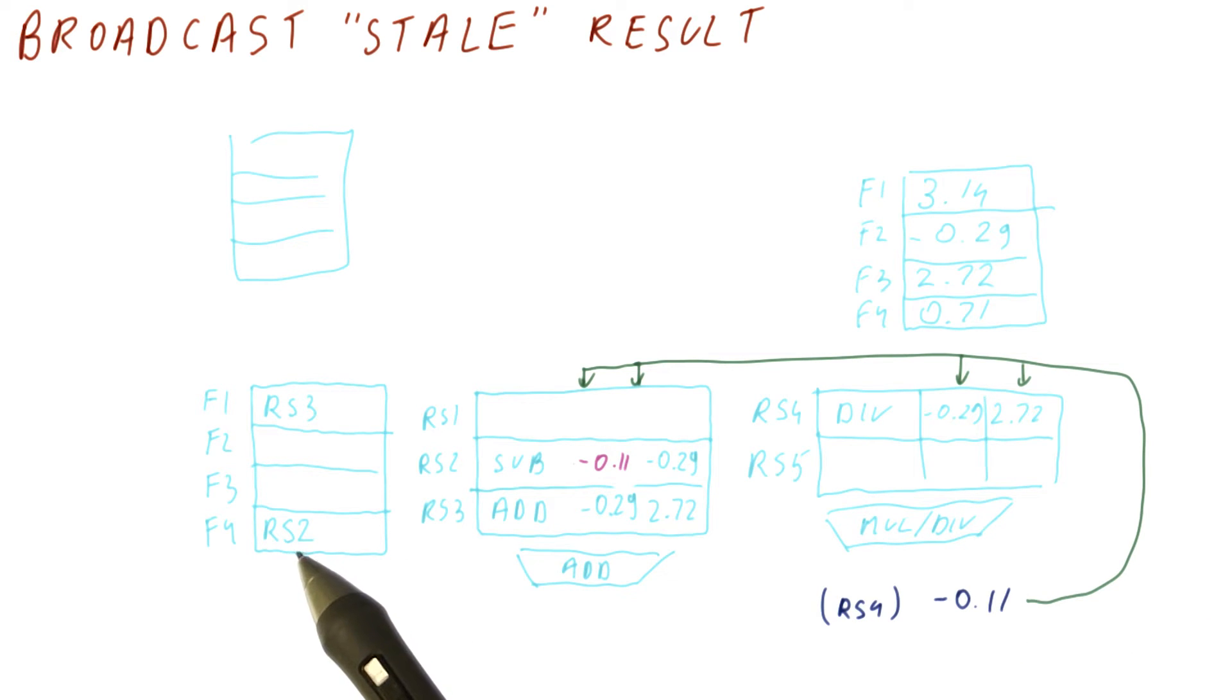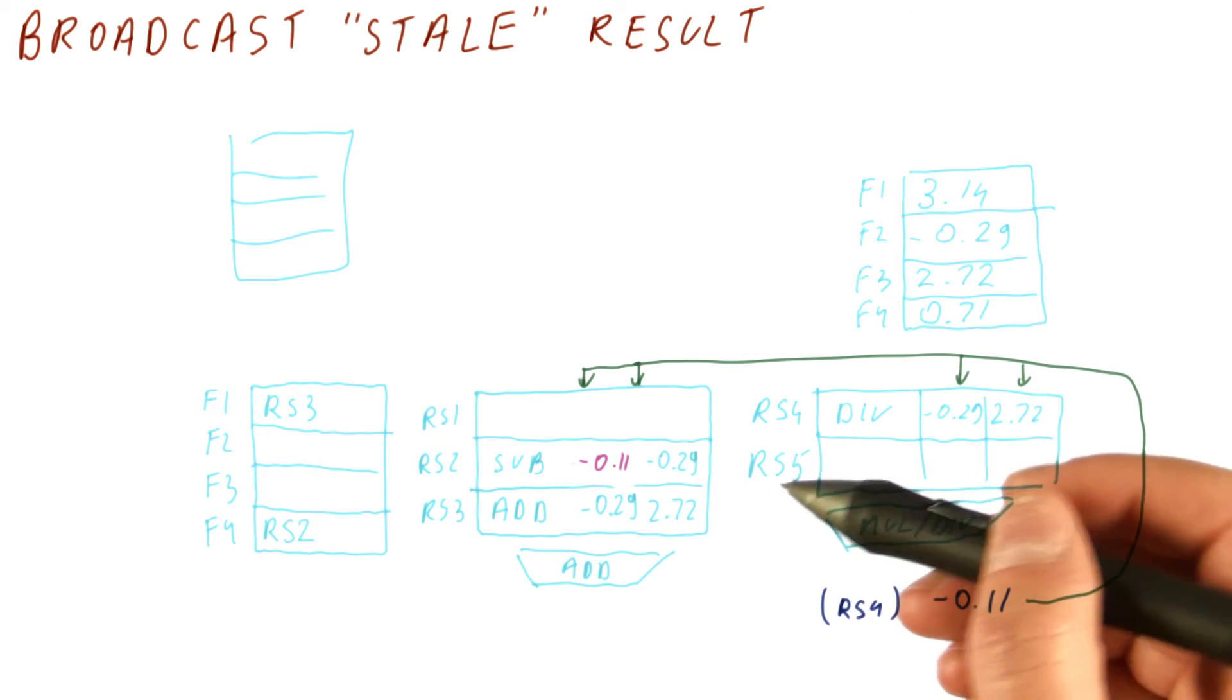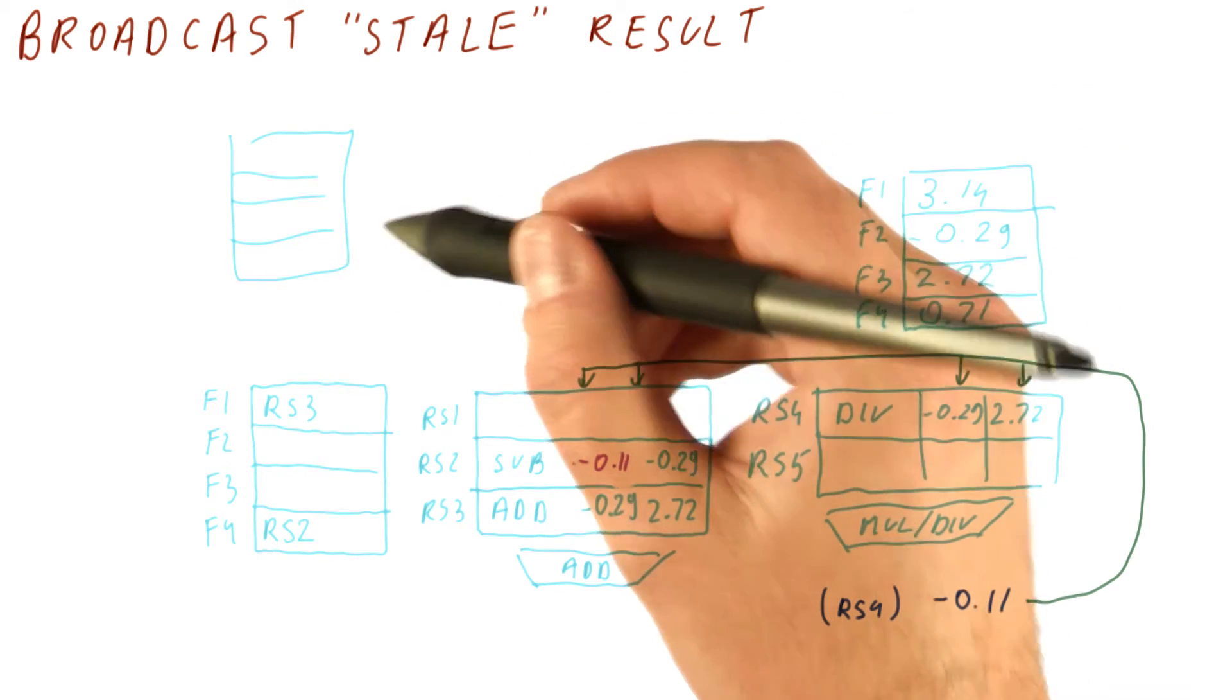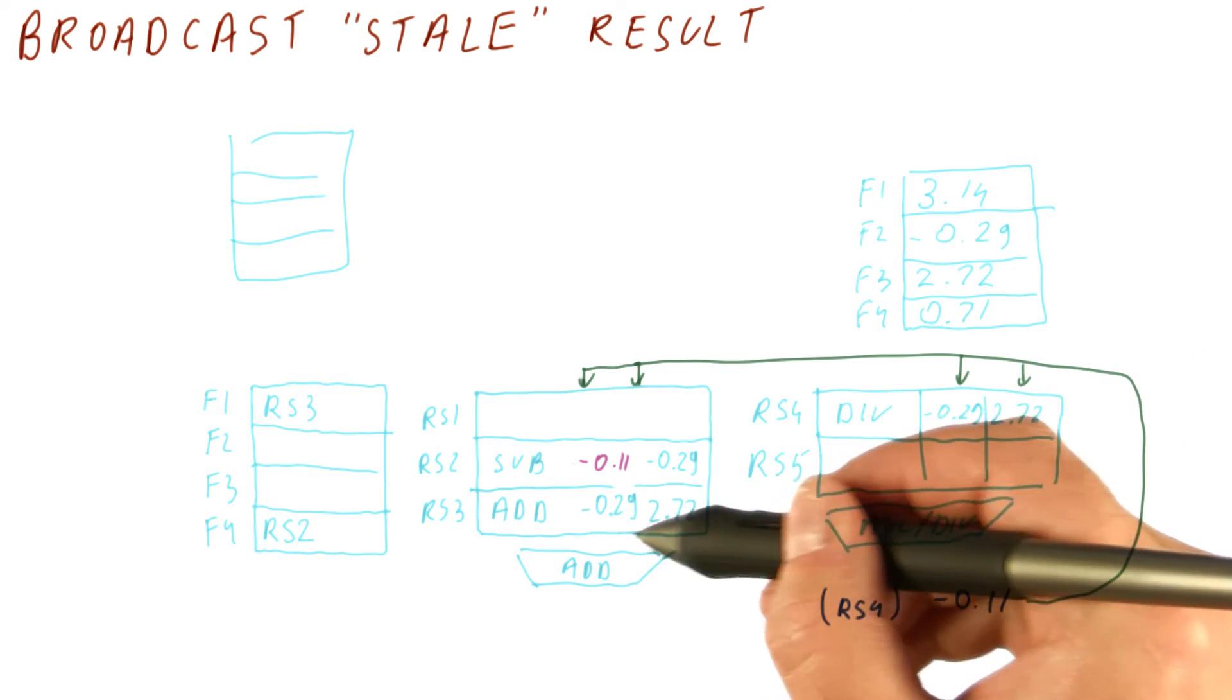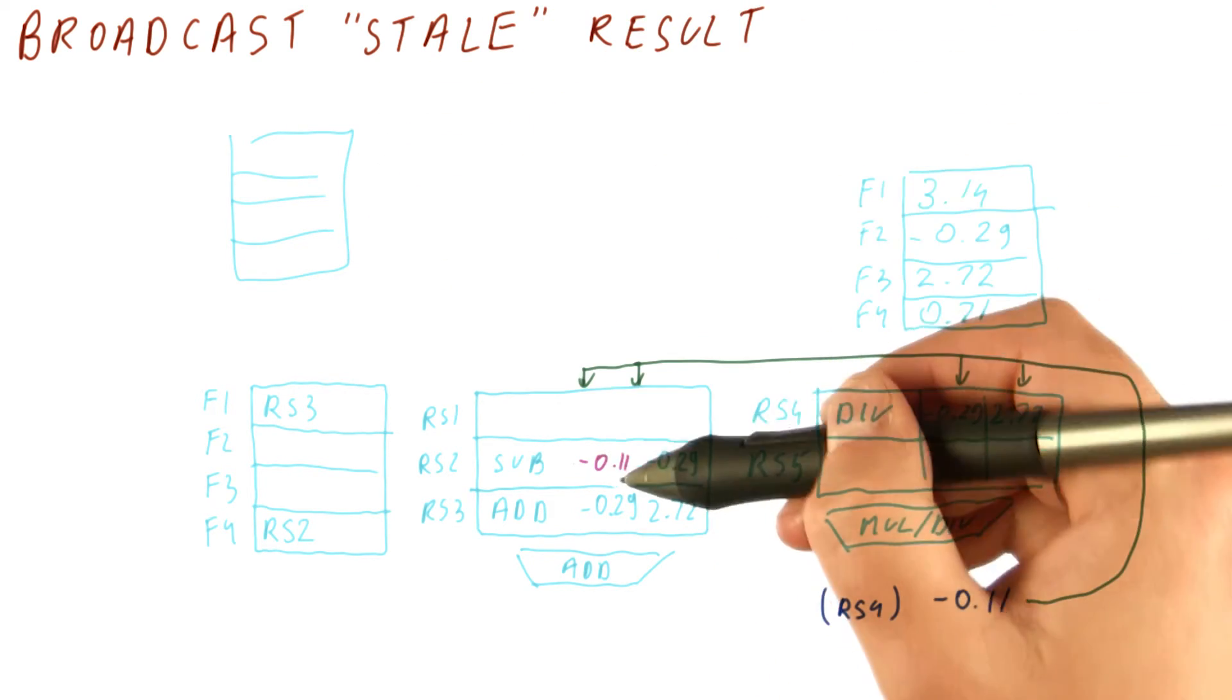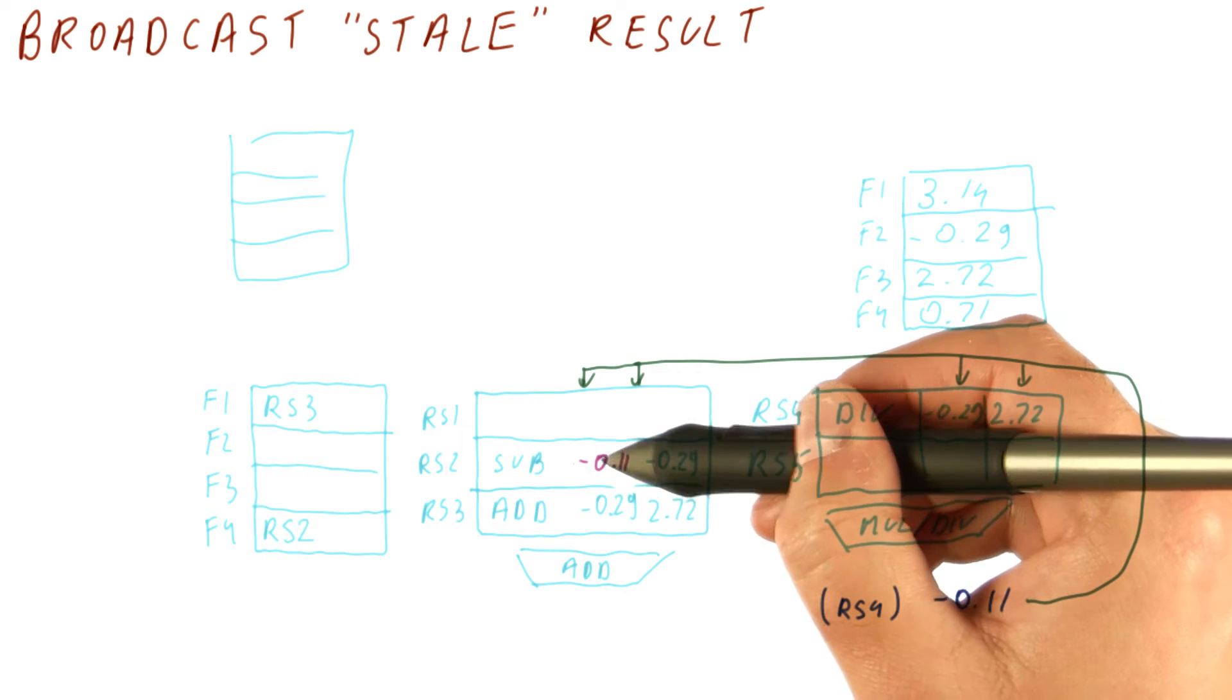However, if this is RS4 and this is RS2, that means that there is a new instruction that is producing the value for this register. So basically, after this instruction here has been renamed, all the instructions that come and read F4 should actually get the new value from this.